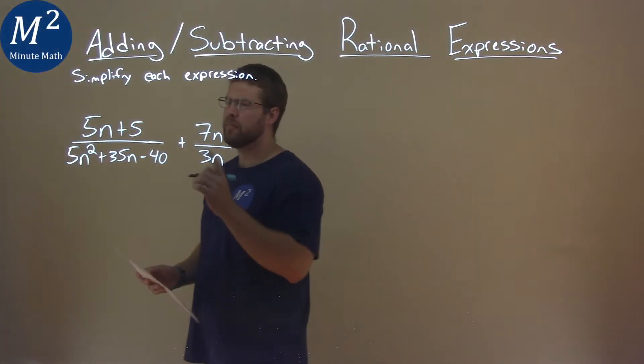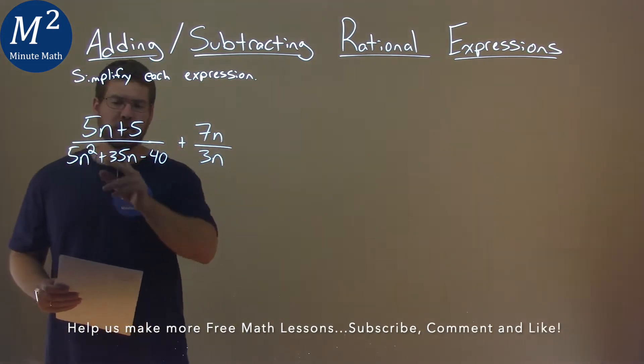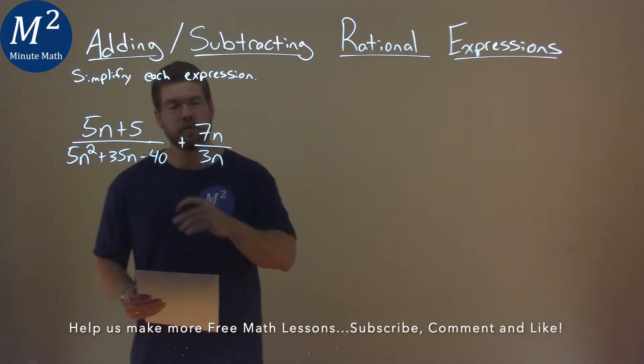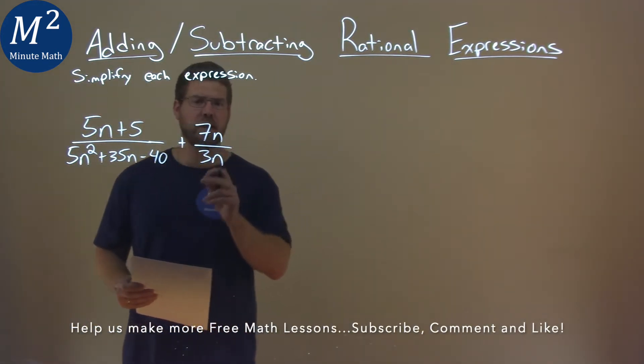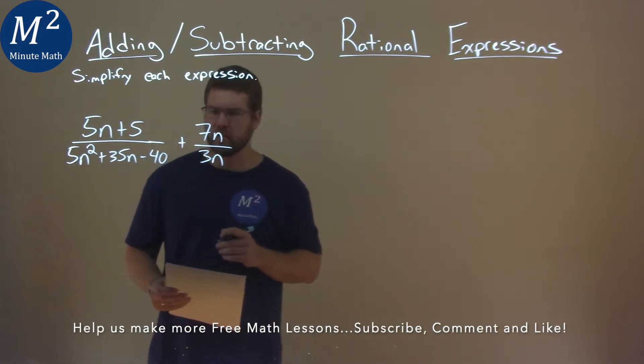We're getting this problem right here. 5n plus 5 over 5n squared plus 35n minus 40 plus 7n over 3n. I'm going to simplify this expression.